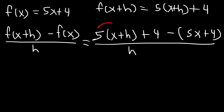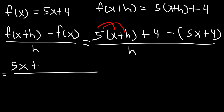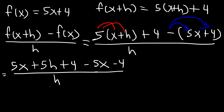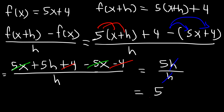First let's distribute the 5: 5 times x is 5x, and 5 times h is 5h, then plus 4. Now we need to distribute the negative sign to everything inside the parentheses, giving us negative 5x minus 4. So 5x plus negative 5x adds up to 0, and 4 and negative 4 cancel. We're left with 5h divided by h, and canceling h leaves the final answer of 5. The difference quotient of 5x plus 4 is equal to 5.